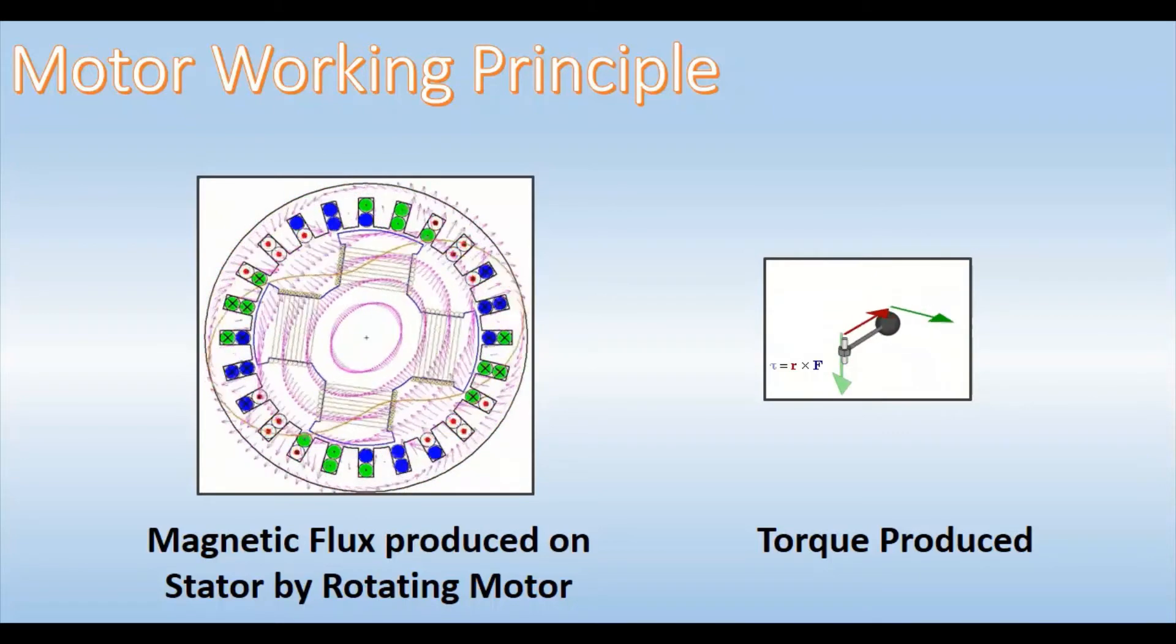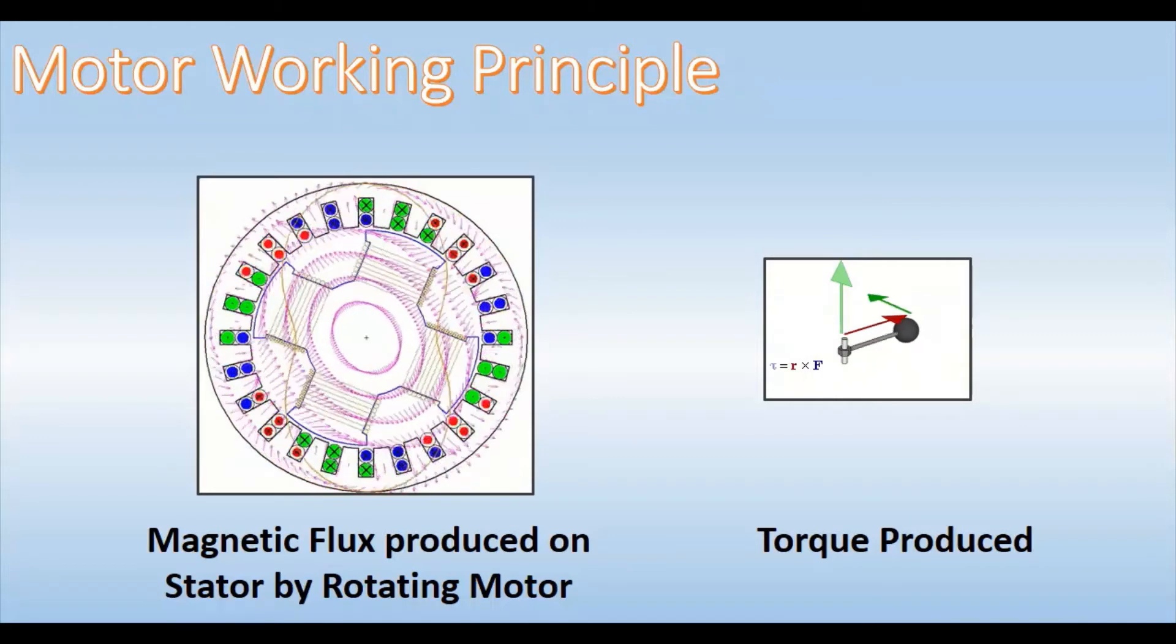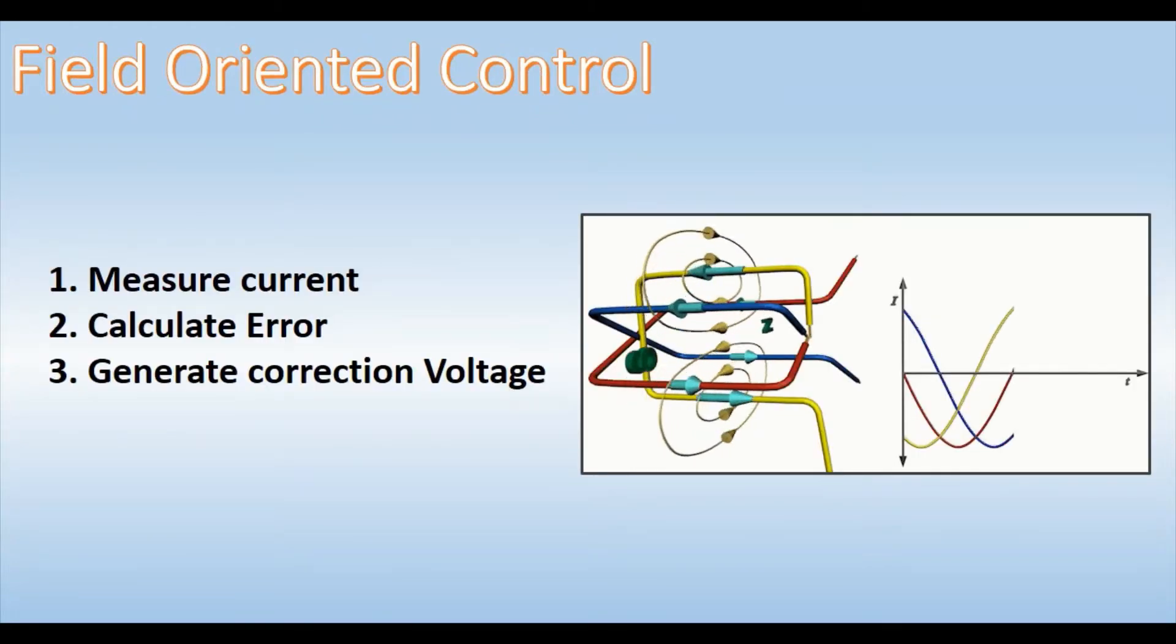To control the torque on the motor, regulate the amplitude of the stator current vector. Field-oriented control is a motor control strategy that decouples flux and torque by transforming the stationary phase currents to a rotating frame. Field-oriented control has three basic steps.